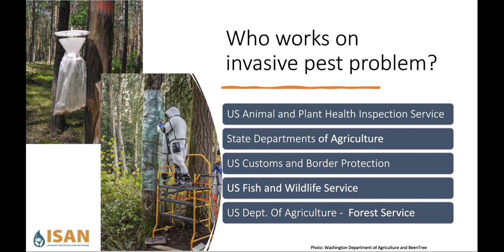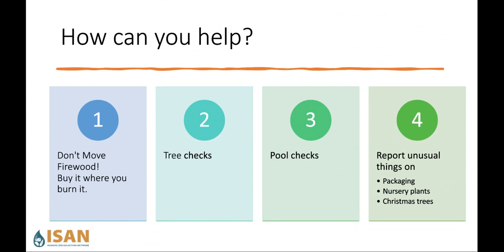We have a lot of different agencies and people working on this problem, but we need more help. You and your friends can help on this invasive pest problem with a couple of easy things. First, don't move firewood — if you're going camping or traveling to a new location, just buy it where you burn it, or collect it locally where you're camping. Also do tree checks during the summer months for things like defoliation or holes in the bark. Look in your backyard pool for unusual insects, and check packaging, nursery plants, or even Christmas trees. If you see something unusual, just report it to your local Department of Agriculture.